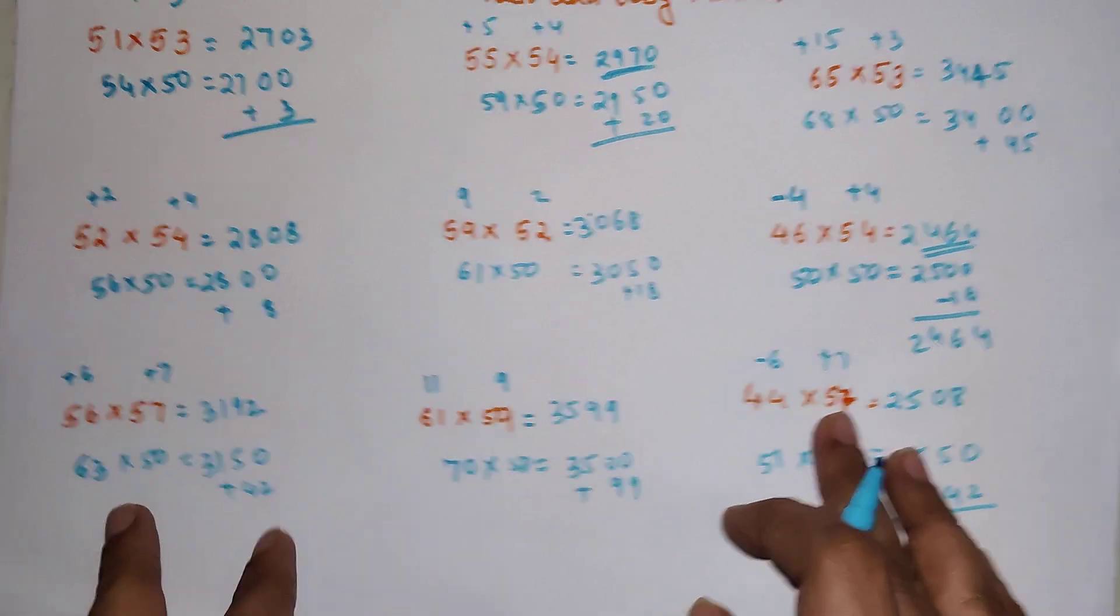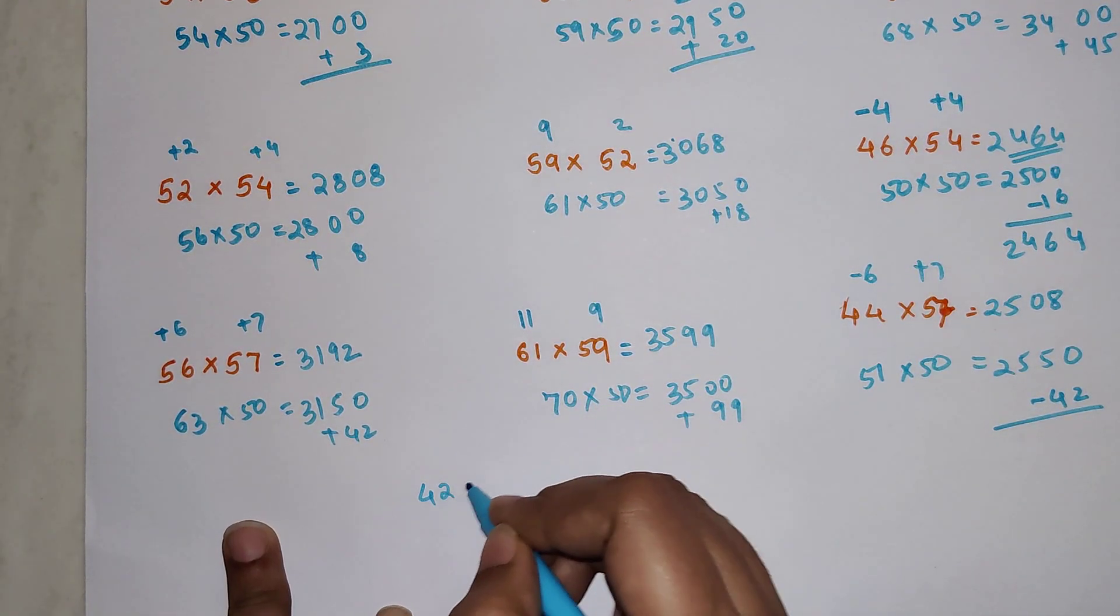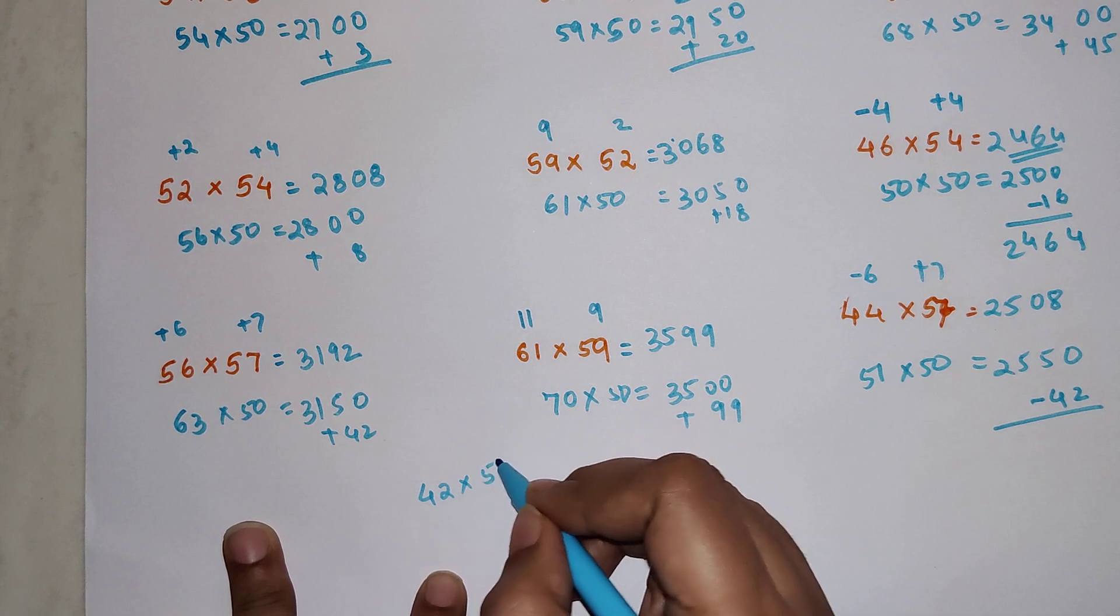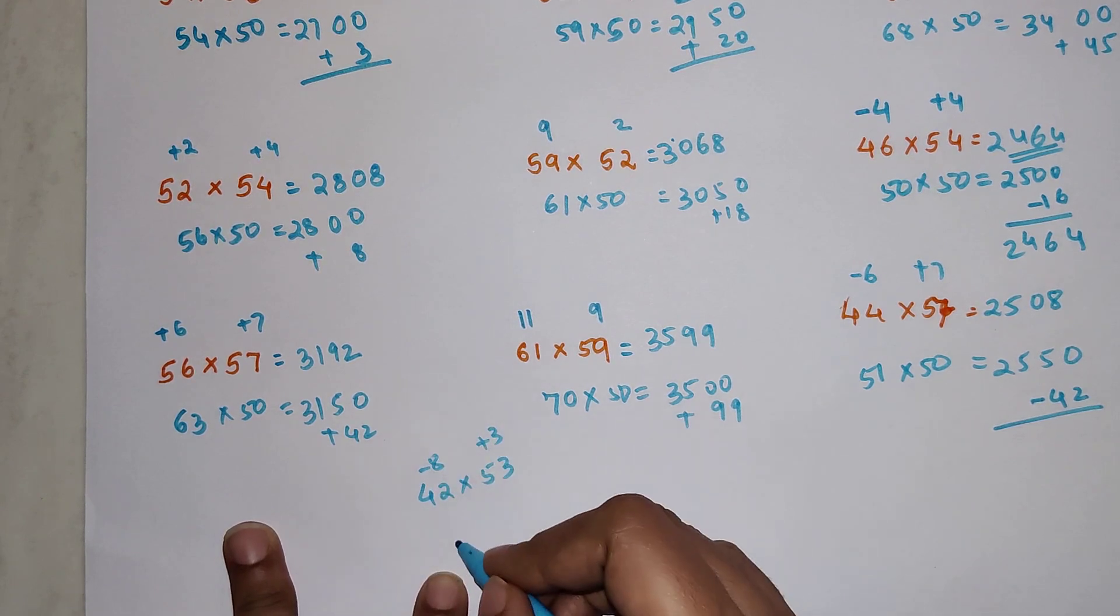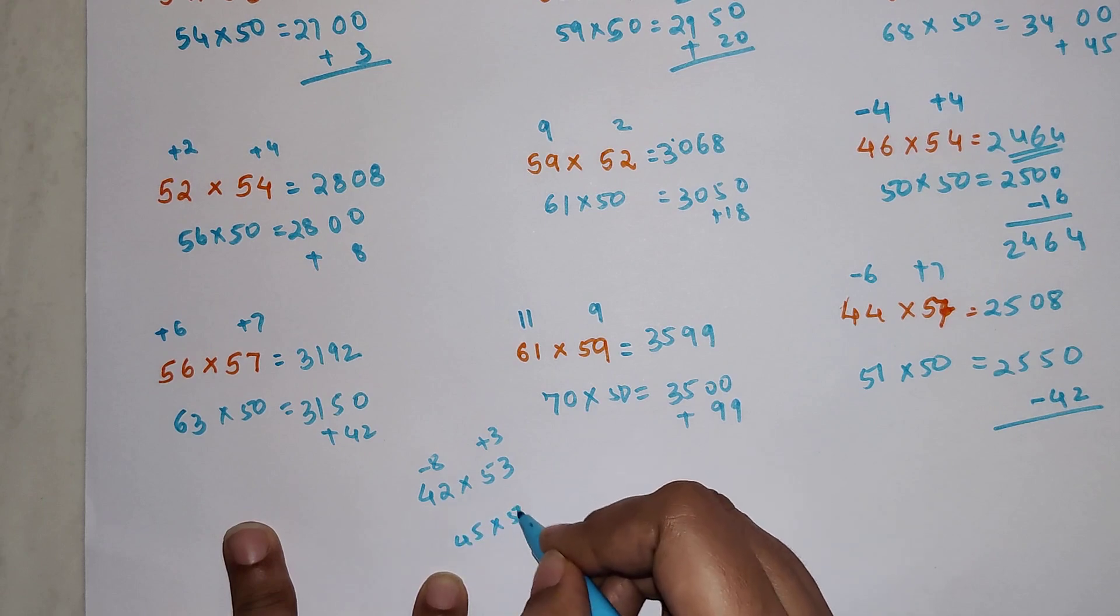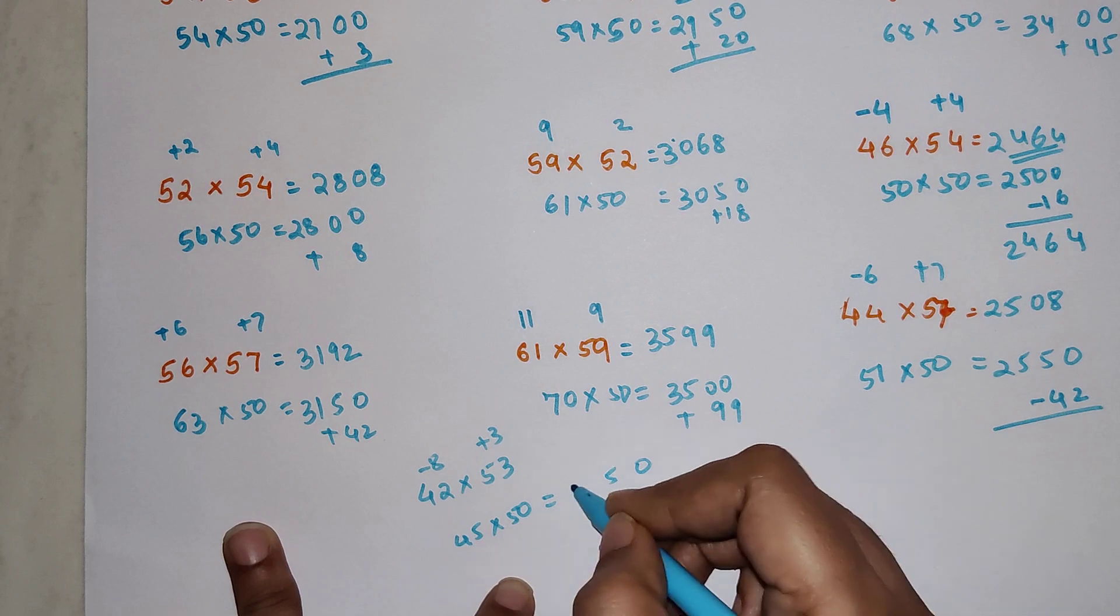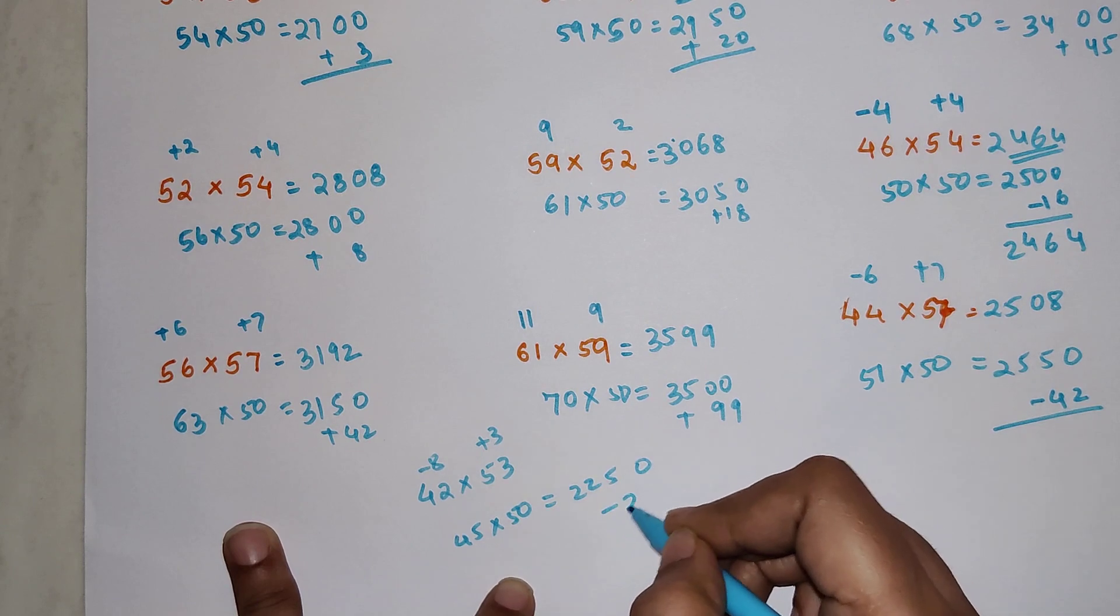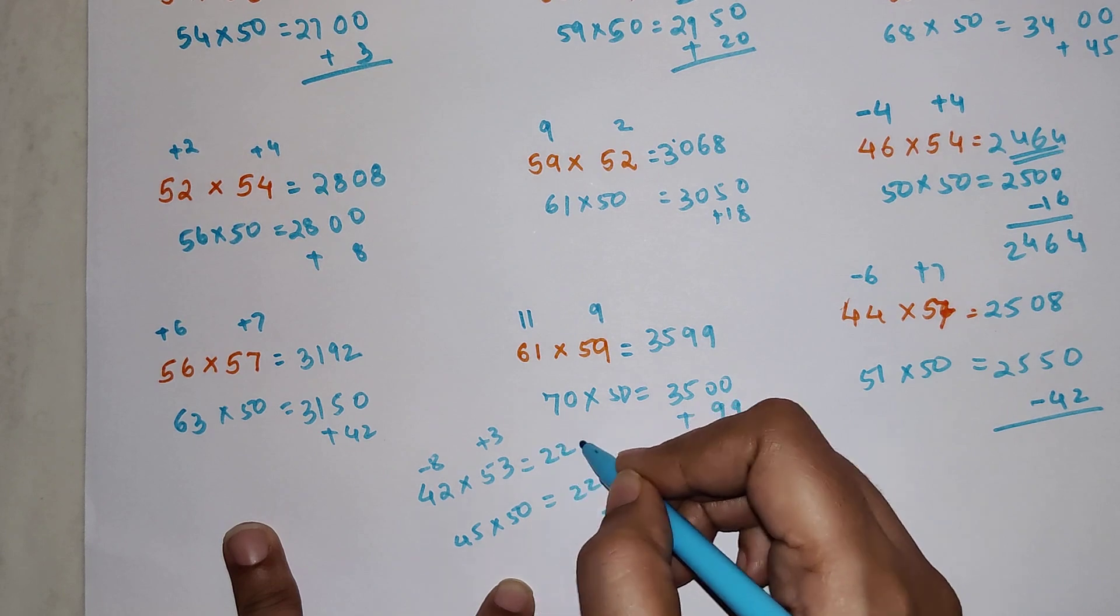If you want, we can do one more sum: 42 times 53. This is plus 3, this is minus 8. So we do 45 times 50, which is 2250, minus 24. Your answer is now 2226.